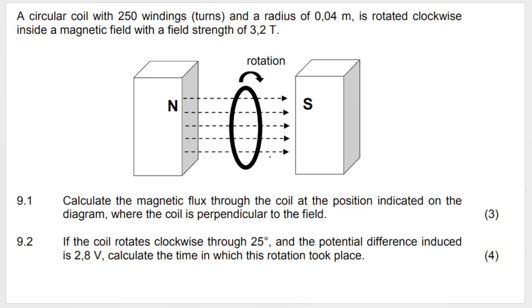In this question we have a circular coil with 250 windings or turns (that would be n in the formula) and a radius of 0.04 meters. The radius is helpful for us to calculate the area, which is important when calculating things pertaining to electromagnetism, electromagnetic induction, and EMF. It's rotated clockwise inside a magnetic field with a field strength of 3.2 tesla. Remember, magnetic field strength is B in the formula.